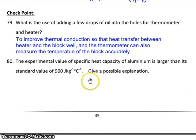In the above video, the specific heat capacity of aluminum was found to be something like 895 joules per kg per degree Celsius.